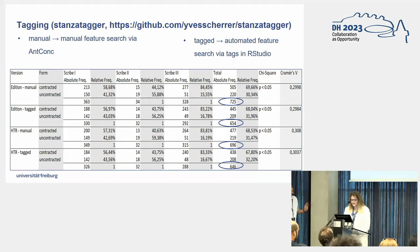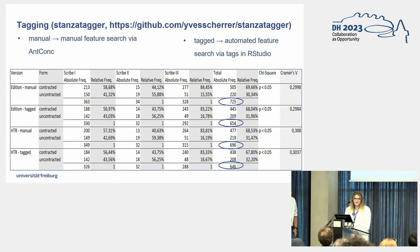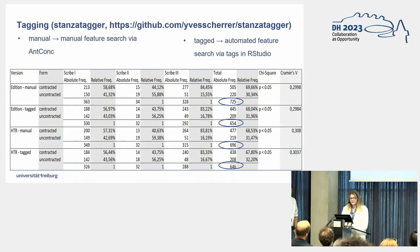Moving to the last step: the tagging. We evaluated the performance of the Stanza tagger using only the handwritten text, divided into the three scribes, and chose another binary linguistic variable — an inflection ending distinguishable as contracted and uncontracted forms. We compared four datasets: first, Ground Truth Manual, our benchmark with manually obtained feature hits; second, Ground Truth Tagged, the ground truth tagged with Stanza and searched via RStudio; and then HTR Manual and HTR Tagged — the same but for HTR data.